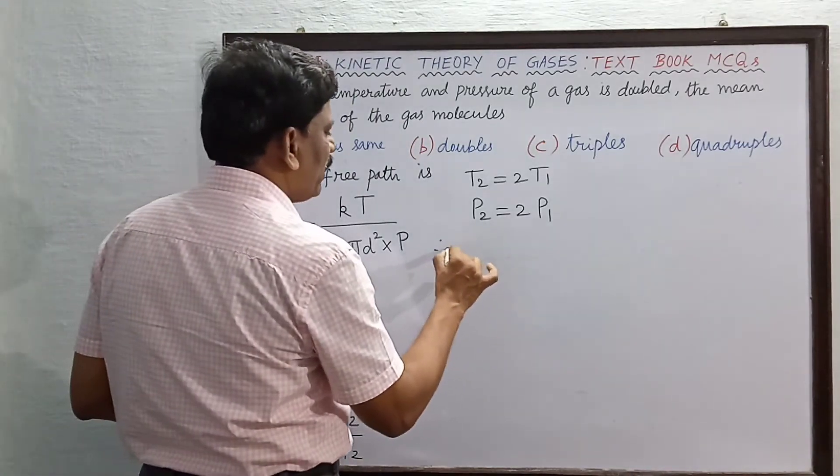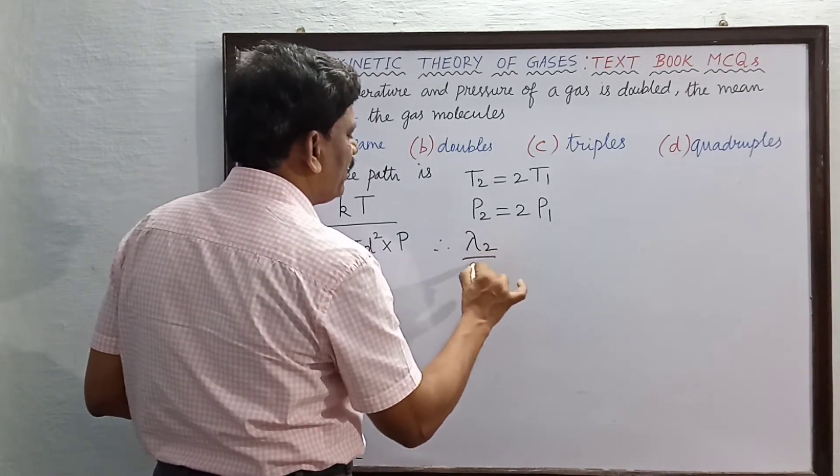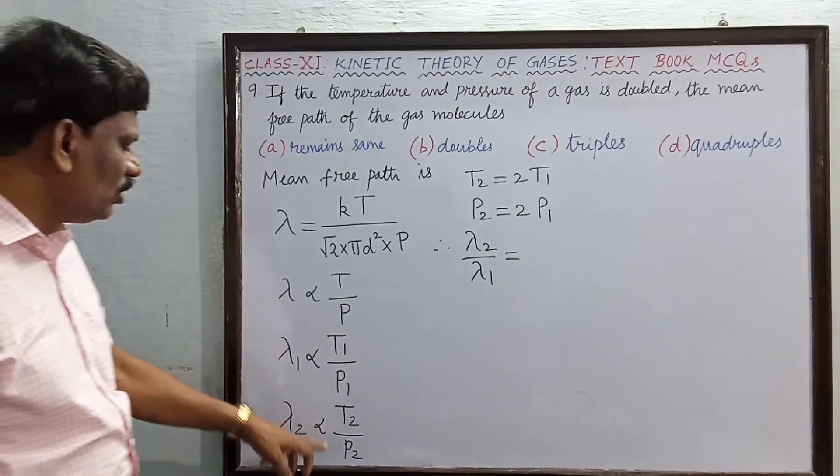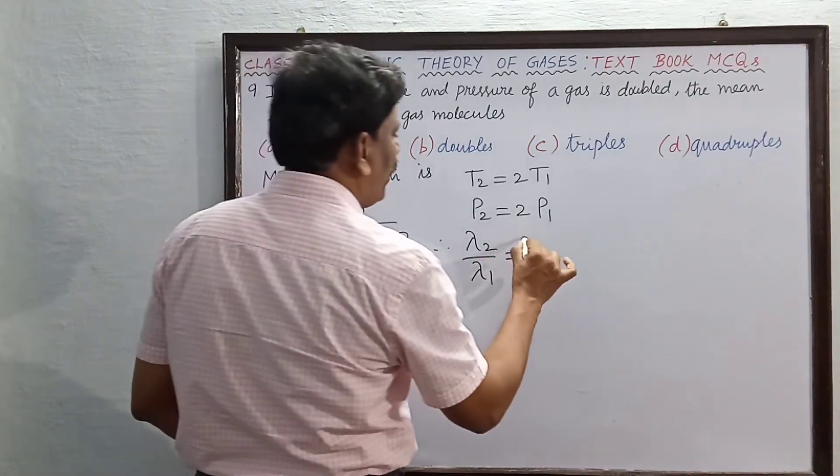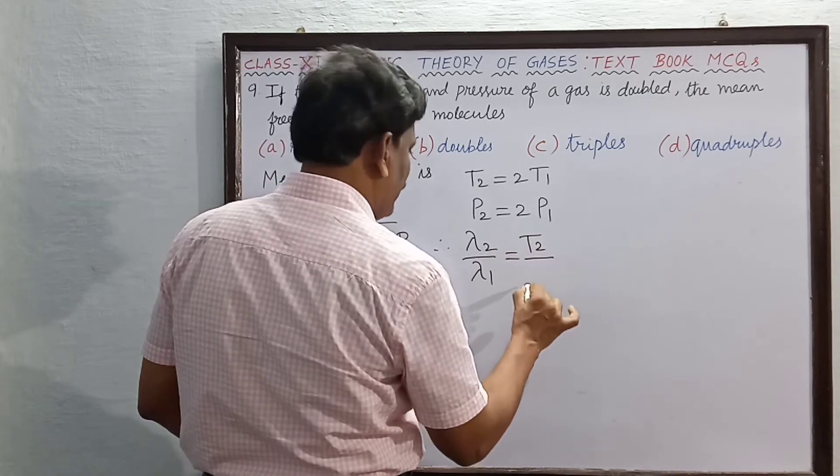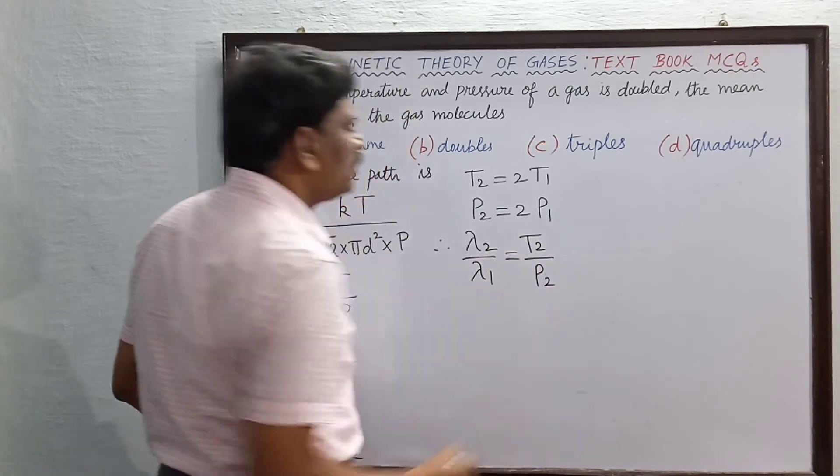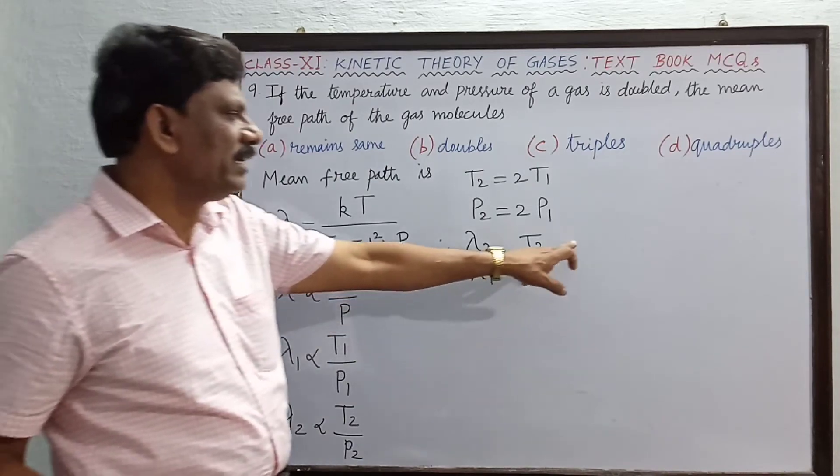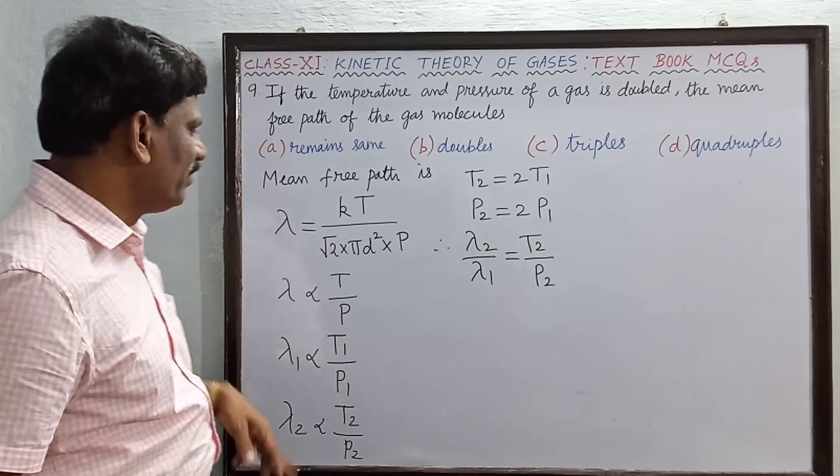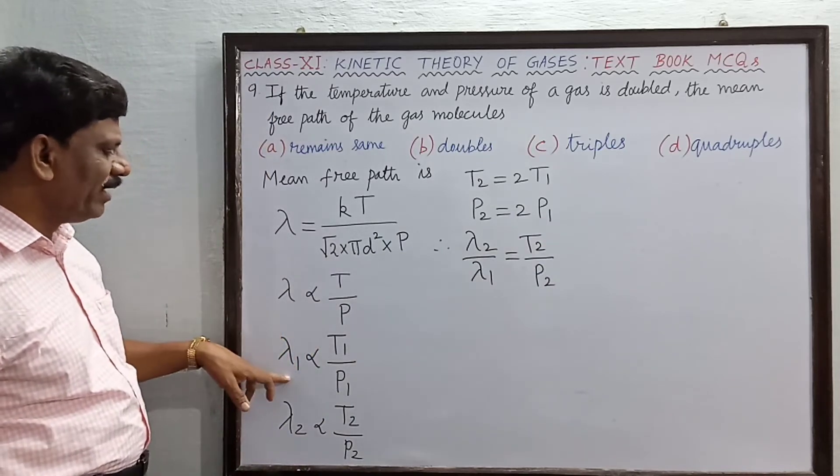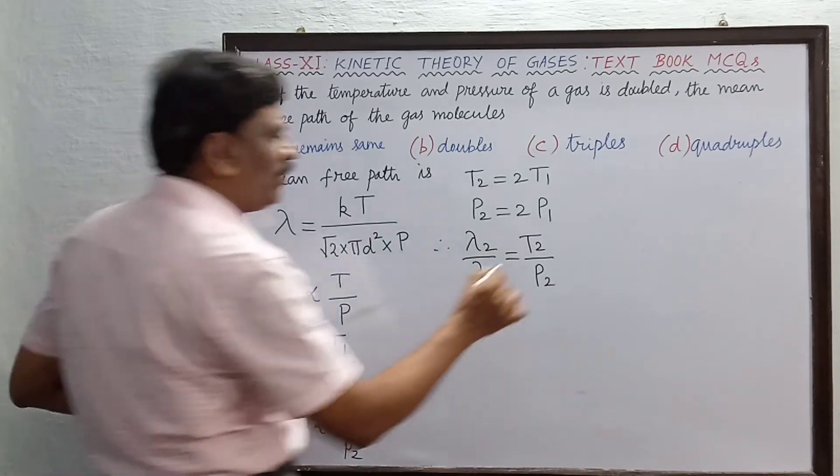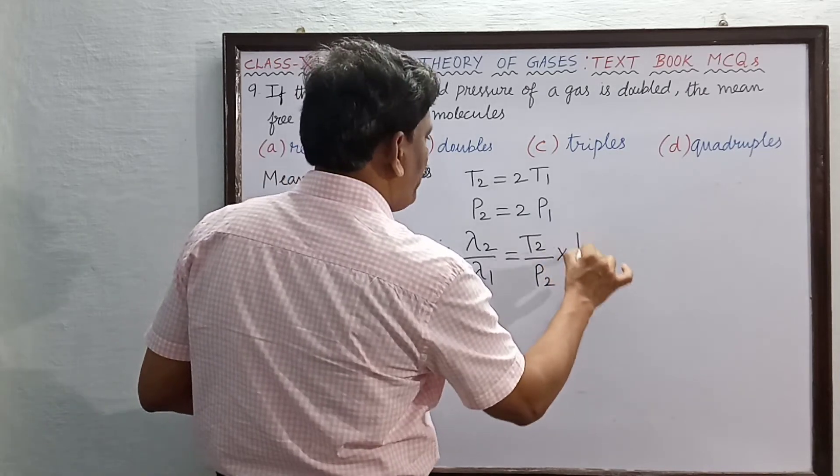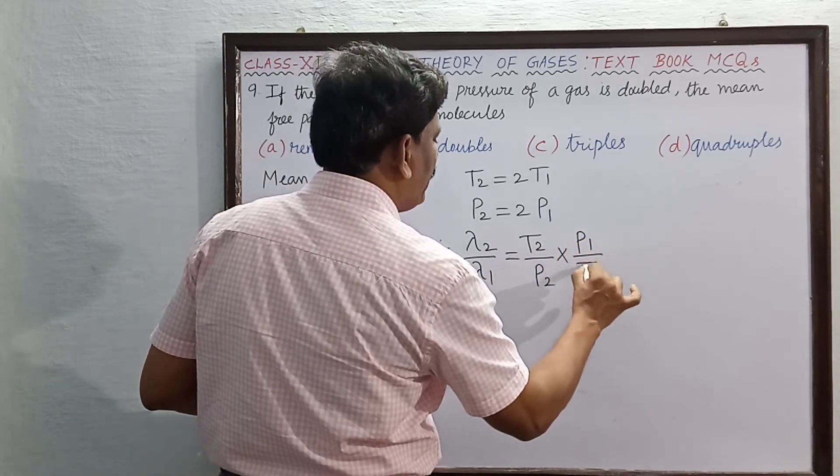Lambda 2 divided by lambda 1 is equal to T2 divided by P2 times the reciprocal. Lambda 2 equals T2 divided by P2 multiplied by P1 divided by T1.